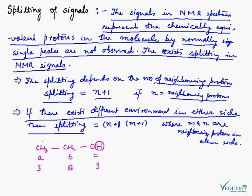We can understand that in any NMR spectrum, the equivalent protons will be split. The number of neighboring protons determines how many peaks the signal will split into.